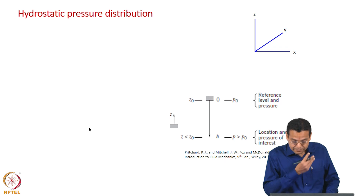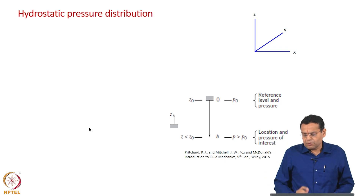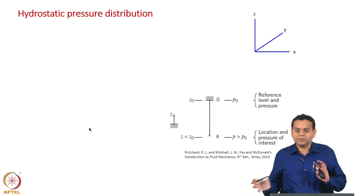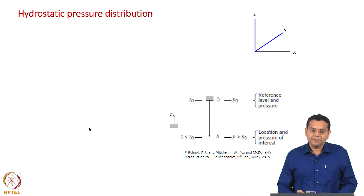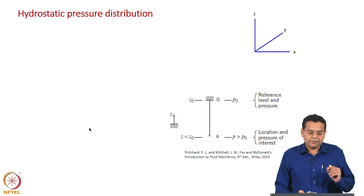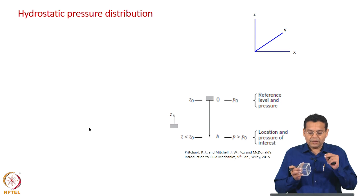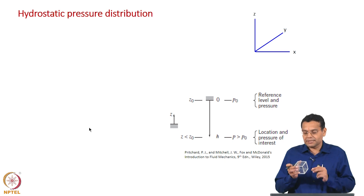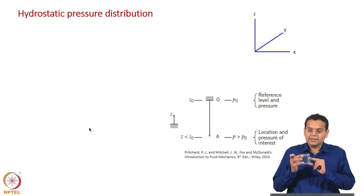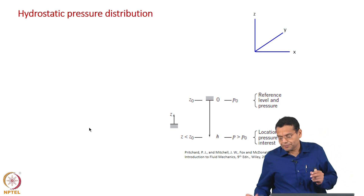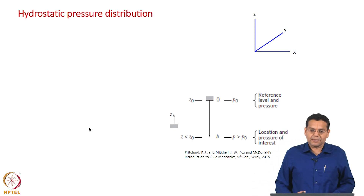The main application of this equation is to find out the pressure distribution in a fluid — more precisely, the hydrostatic pressure distribution. The pressure distribution in a fluid under static condition is called hydrostatic pressure distribution. For a fluid under rest, there is only normal stress because of pressure, and that pressure distribution is called hydrostatic.